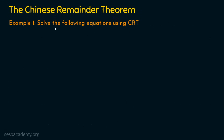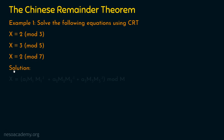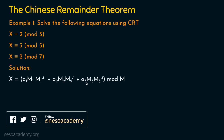Let's see example number one: solve the following equations using Chinese remainder theorem. The equations are x is congruent to 2 mod 3, x is congruent to 3 mod 5, and x is congruent to 2 mod 7. We have 3 equations, so we modify the formula to: x equals a1·M1·M1_inverse plus a2·M2·M2_inverse plus a3·M3·M3_inverse, whole mod M.